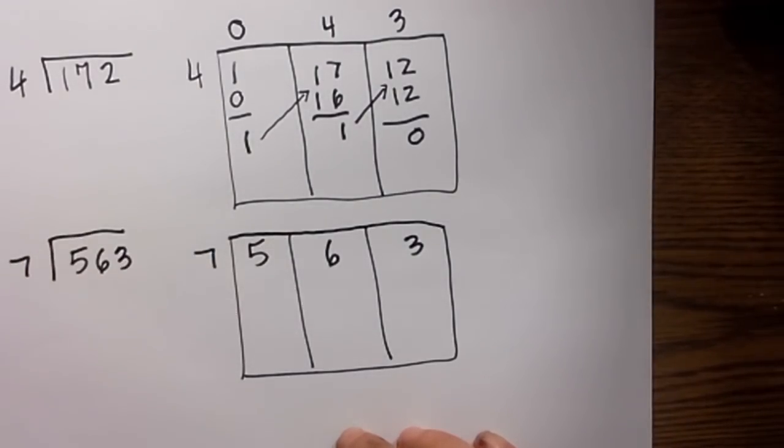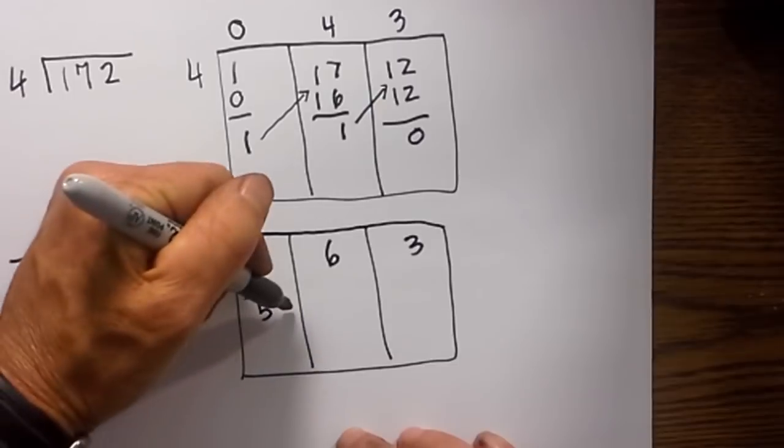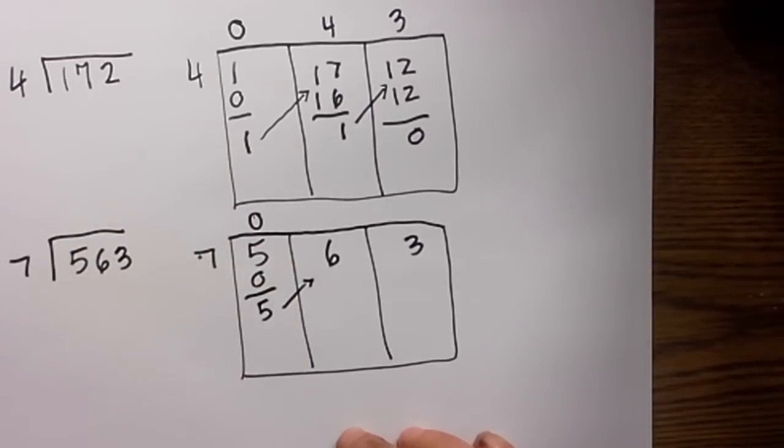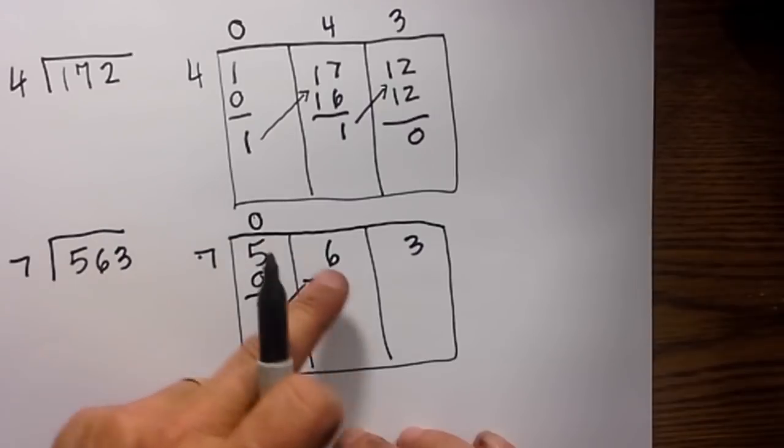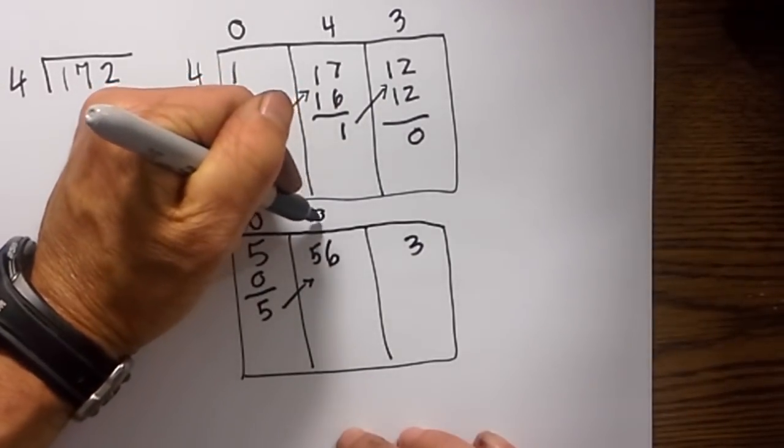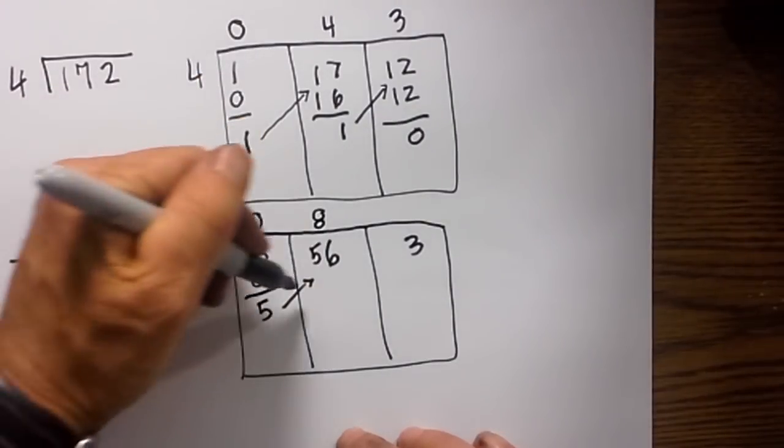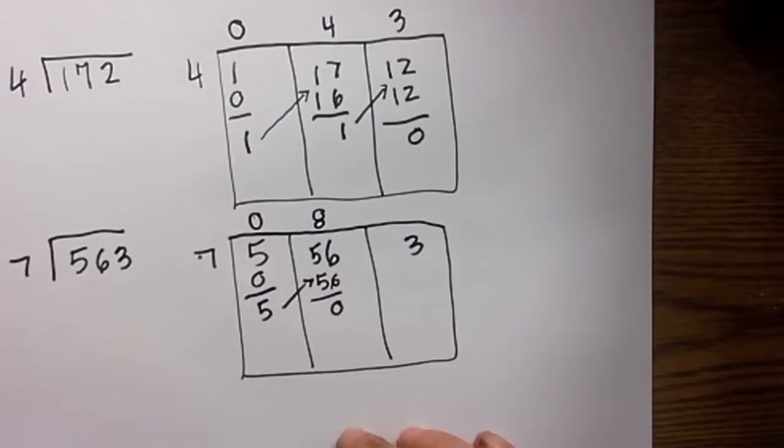Seven will not go into five, so we'll place a zero above. Zero times seven is zero. Bring down the five. Swing the five over to the next column, so now we're in the tens. Seven will go into 56 eight times. Eight times seven is 56, so we have zero left over.